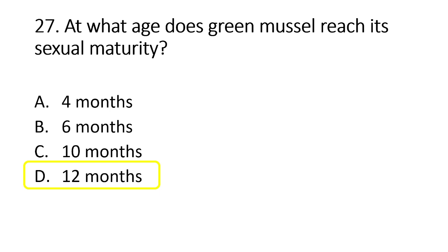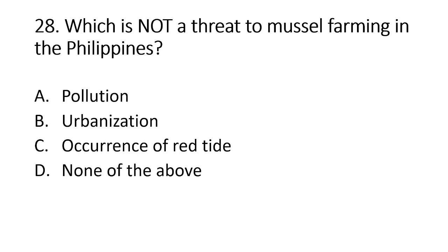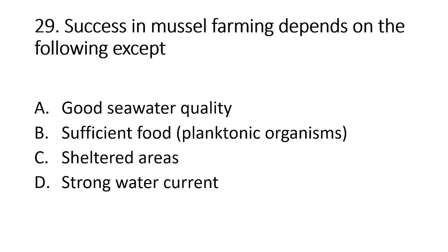Number 28. Which is not a threat to mussel farming in the Philippines? A. Pollution. B. Urbanization. C. Occurrence of red tide. D. None of the above. The answer is letter D, there are plenty of threats to mussel farming which include pollution, urbanization, and red tide bloom among others. Number 29. Success in mussel farming depends on the following except: A. Good sea water quality. B. Sufficient food, planktonic organisms. C. Sheltered areas. D. Strong water current. The answer is letter D, it is not advisable to culture mussel in areas having strong water current.